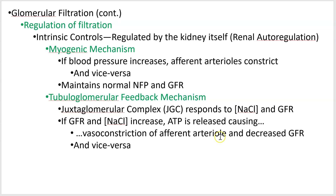High salt causes vasoconstriction, which causes decreased glomerular filtration rate — you cut down on how much fluid you lose. If your blood has too many salts it probably means you're dehydrated, so you want to reduce fluid loss and get some water on board. Vice versa, if blood is too watery and salt concentration is too low, you'll vasodilate and lose more urine.